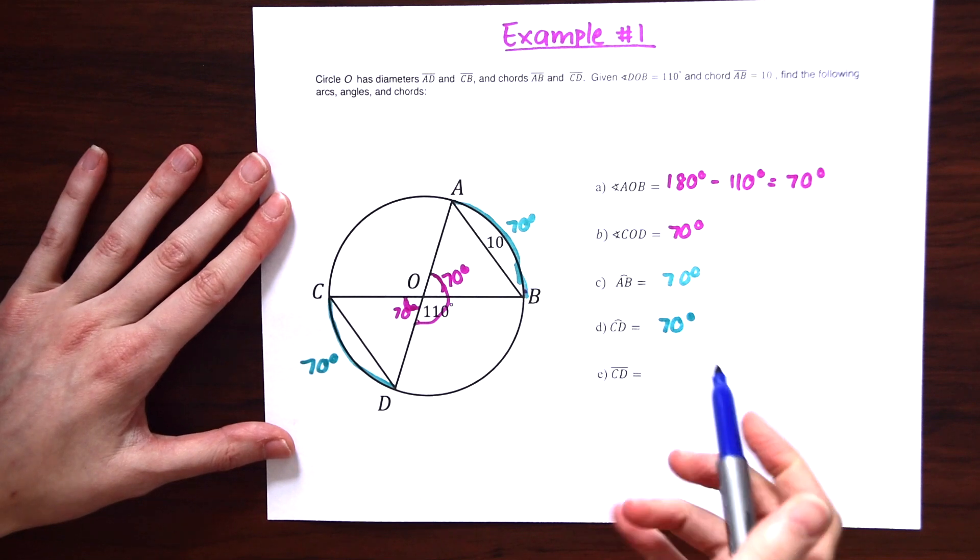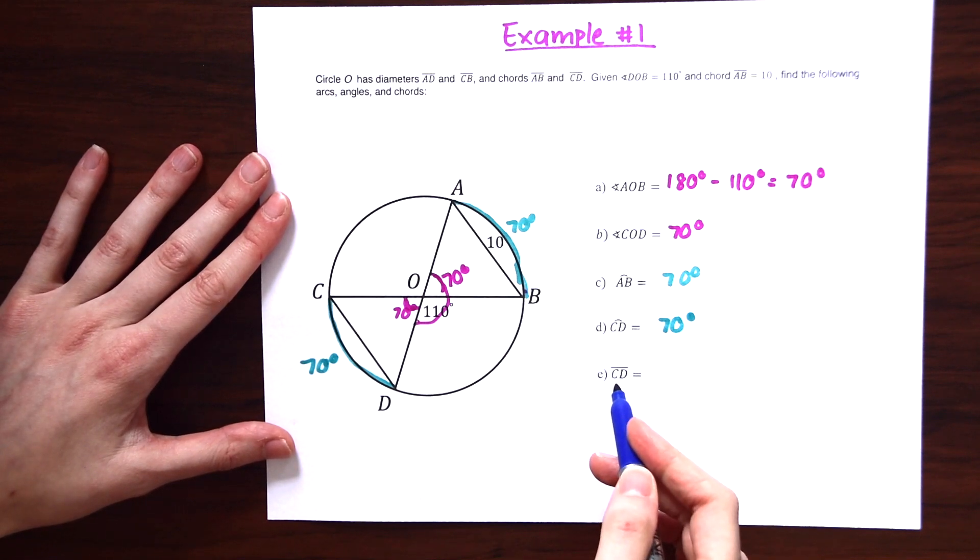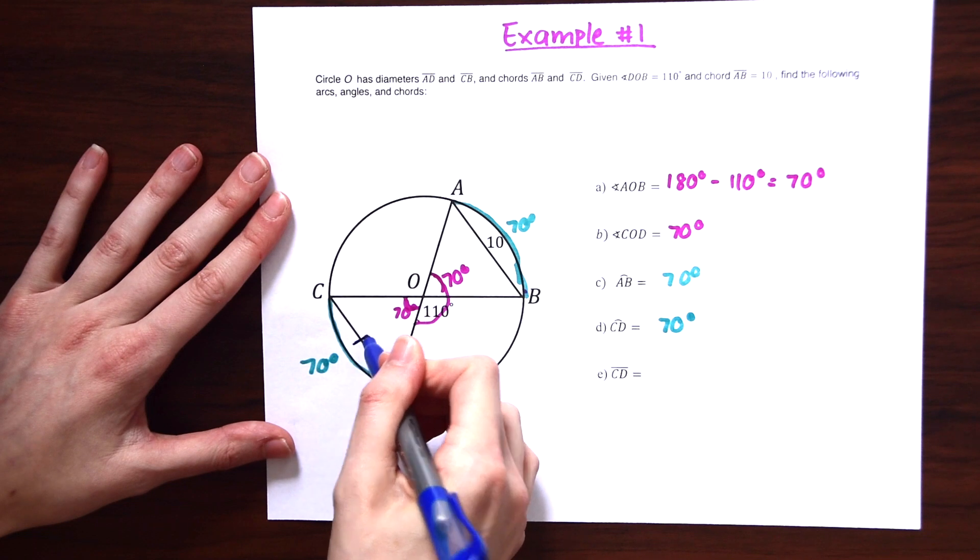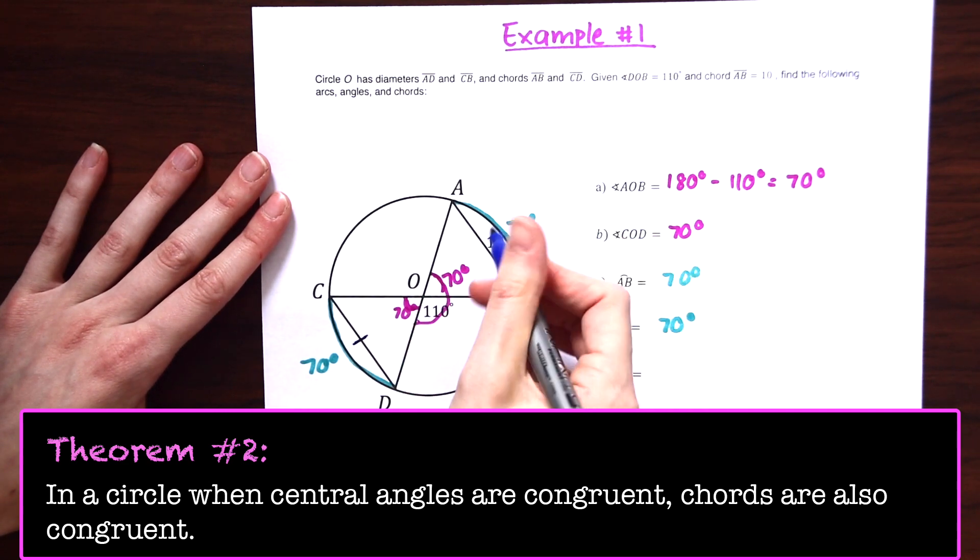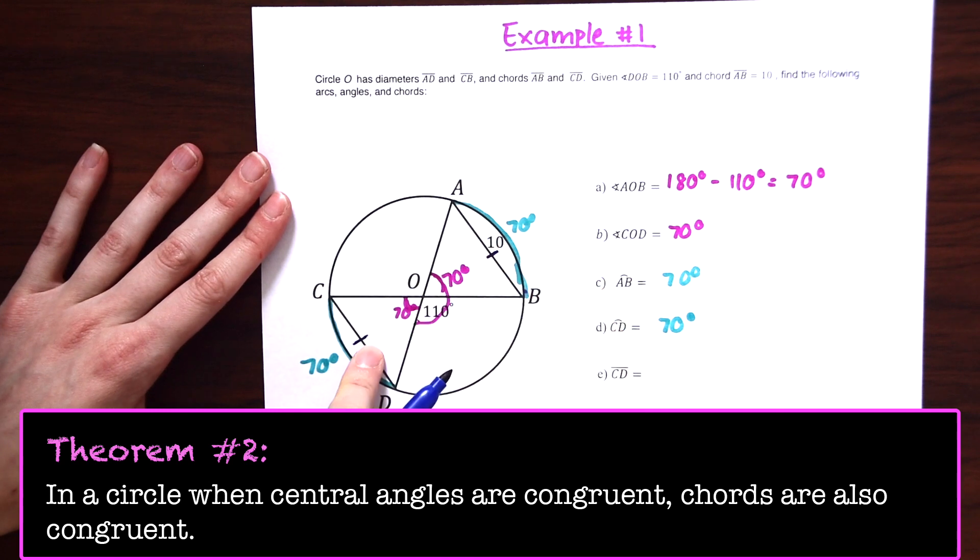And the last part of our question, we want to know the value of CD. So right here. So remember from our second theorem that chords are equal to each other if their angles are equal to each other. So we already know their angles are equal, so we know that their chords are too. And over here, they gave us a value of 10. So we know that this is also going to be 10.